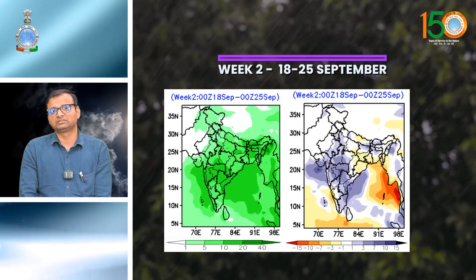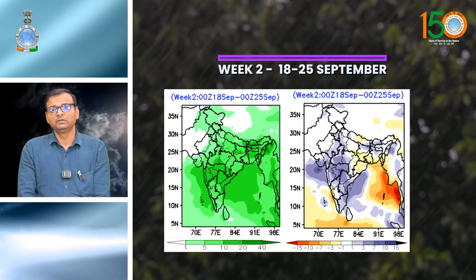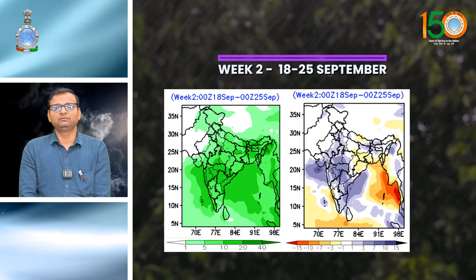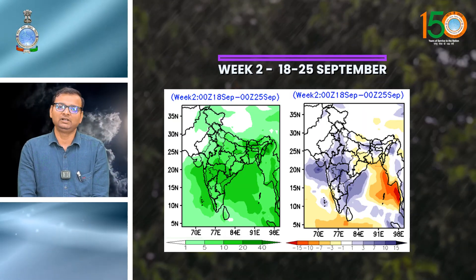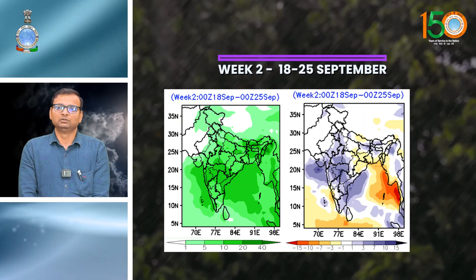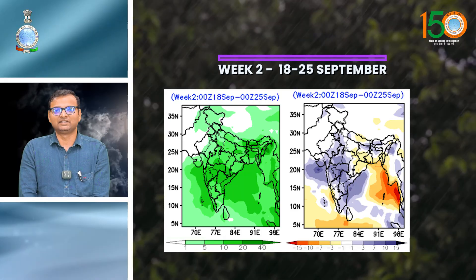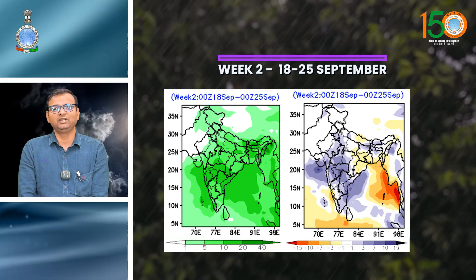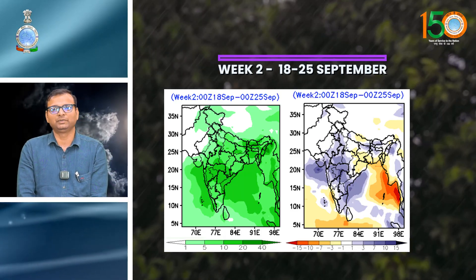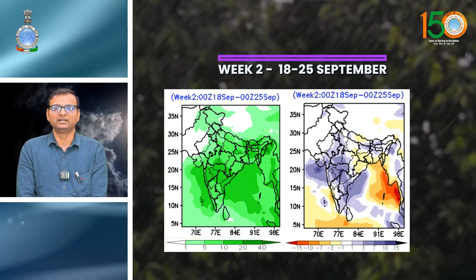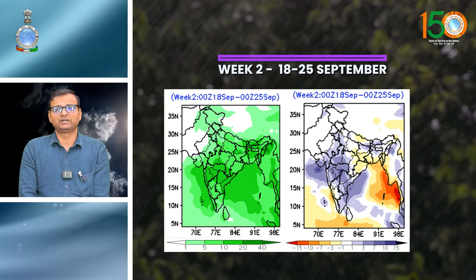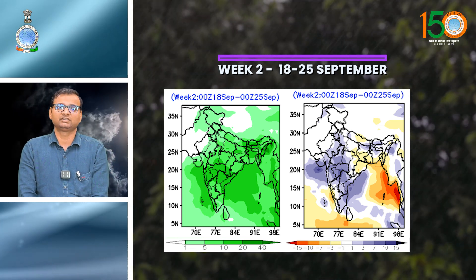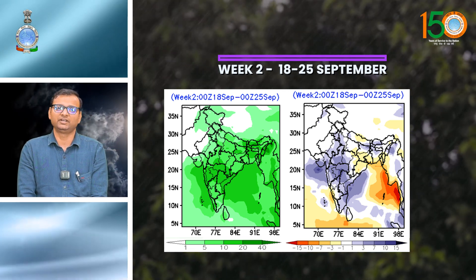For week two, rainfall activity is likely to be normal to above normal over northwest and central India and many parts of south peninsular India, and near normal over most parts of east and northeast India.